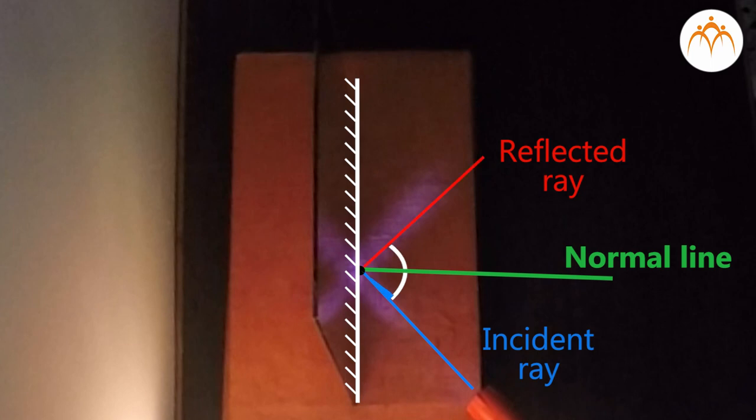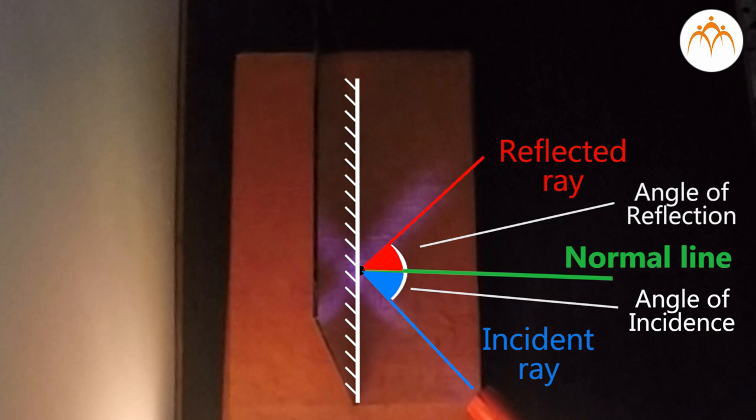The angle between the incident ray and the normal is known as angle of reflection. These two angles are labeled with the Greek letter theta accompanied by subscript. Read it as theta i for angle of incidence and theta r for angle of reflection.